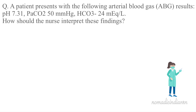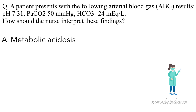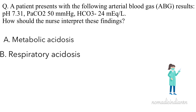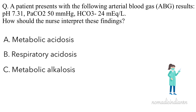Here's a quick NCLEX style question: A patient presents with the following arterial blood gas results — pH is 7.31, partial pressure of CO2 is 50, and bicarbonate level is 24. How should the nurse interpret these findings? A. Metabolic acidosis. B. Respiratory acidosis. C. Metabolic alkalosis. D. Respiratory alkalosis.